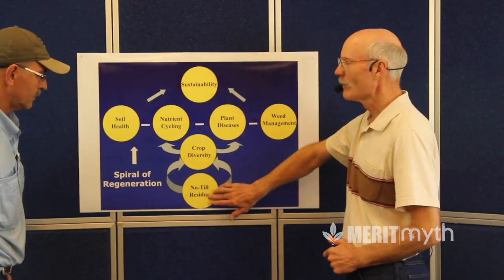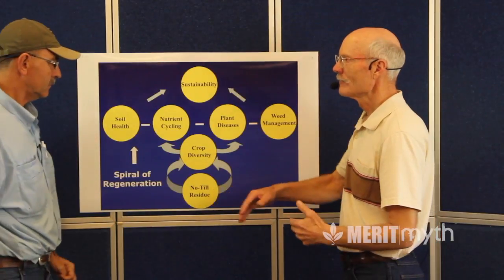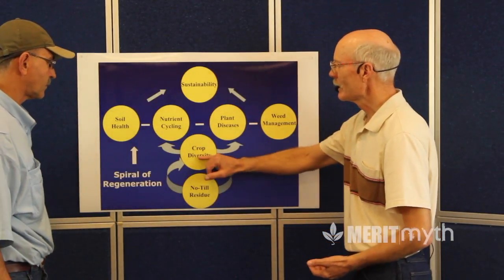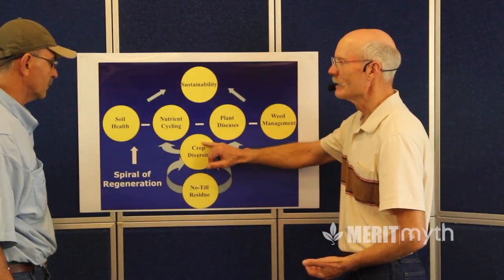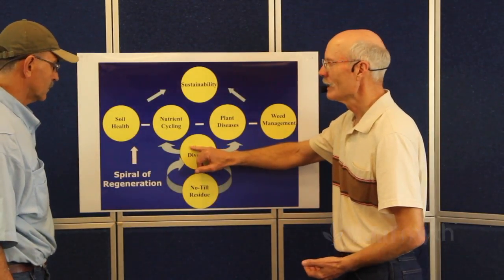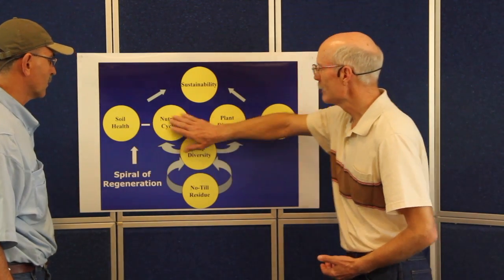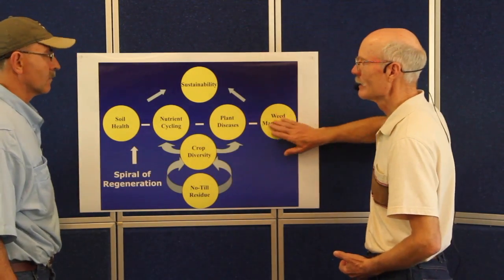This led me to consider what I refer to as a spiral of regeneration. We started with no-till and crop residue. Because we had more soil water, we could have more diversity in our rotations. This led us to gain a wide suite of benefits. Stay with us as Dr. Anderson walks us through the benefits of soil health. See you soon.